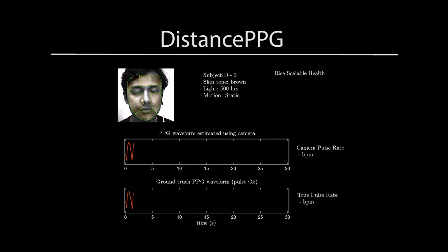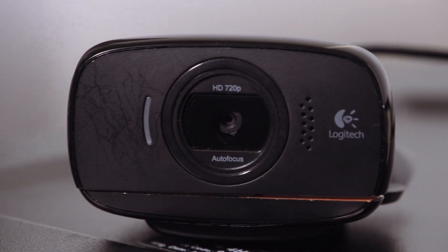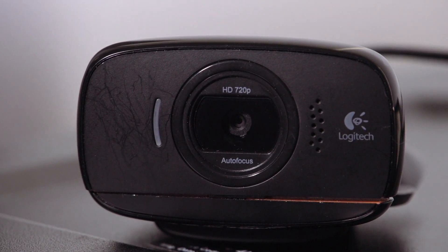Distance rPPG is a non-contact method of measuring vital signs like pulse rate and breathing rate. Generally, vital signs are measured using contact probes and patches which cause skin damage, particularly for newborn babies. We try to solve that using distance rPPG. This algorithm allows you to estimate vital signs using just a camera, like a webcam, and it is as reliable as a contact-based method.